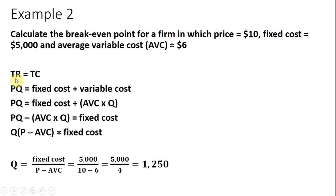Let's set up our important condition: total revenue equals total cost for the break-even point. Total revenue is price times quantity. Total cost is fixed cost plus variable cost. The most critical part is recognizing that variable cost can be written as average variable cost times quantity. So if you know the variable cost per unit and multiply it by the number of units of output, you get back variable cost. Next, subtract average variable cost times quantity from both sides, then factor out a Q term on the left-hand side. Dividing through gives us this important expression: the break-even output equals fixed cost divided by the price minus average variable cost.